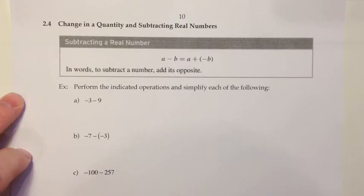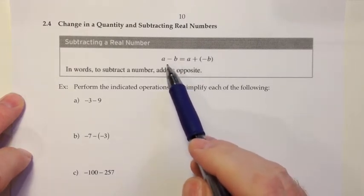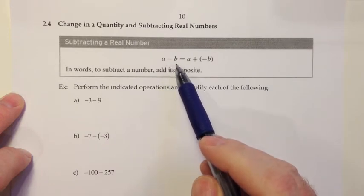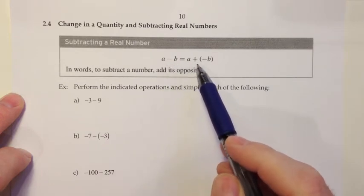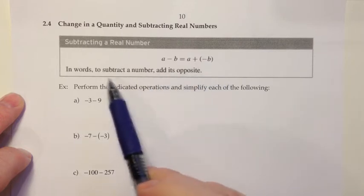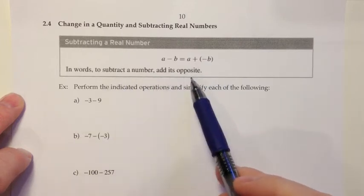And to subtract with signed numbers, we just use a little math trick, which is that we can rewrite any subtraction, a minus b, as an addition, a plus negative b. Or in words, to subtract a number, you can add its opposite.